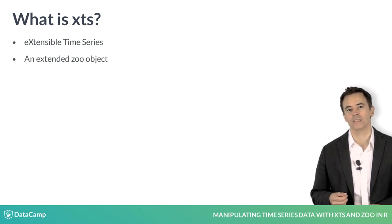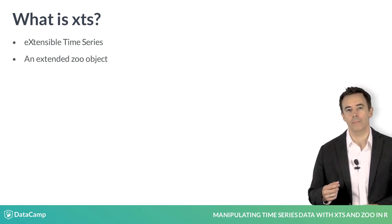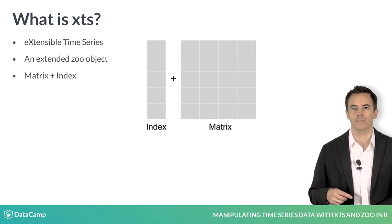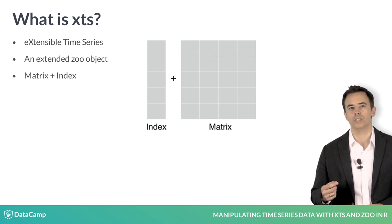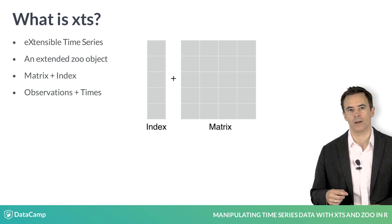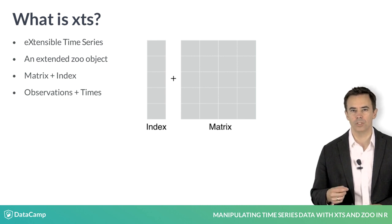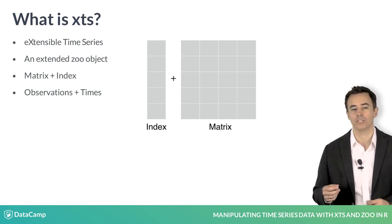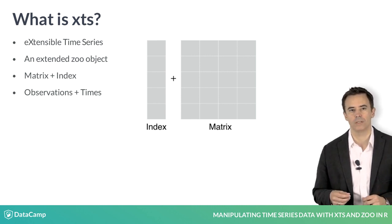At the heart of an XTS is a zoo object: a matrix object plus a vector of times corresponding to each row, which in turn represents an observation in time. Visually, you can think of this as data plus an array of times.